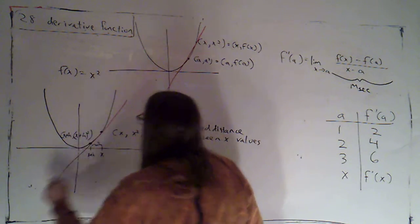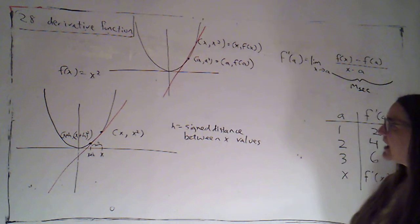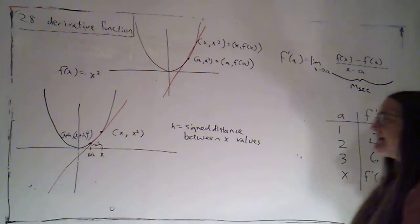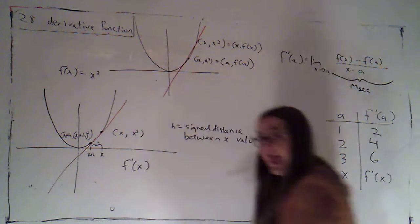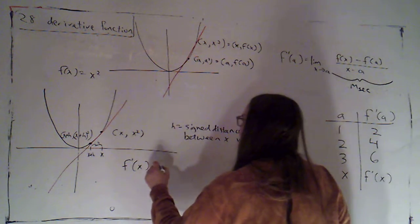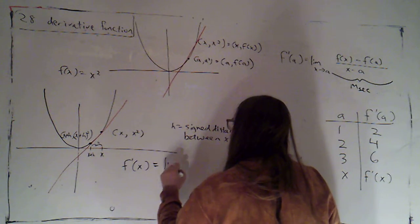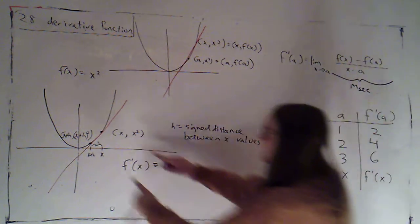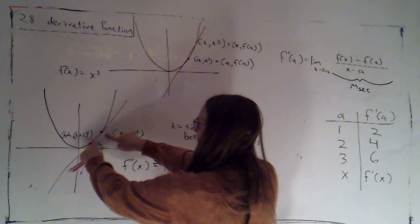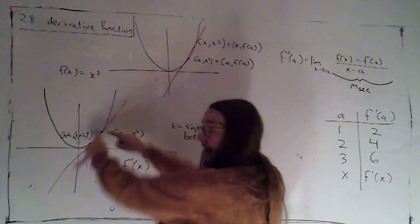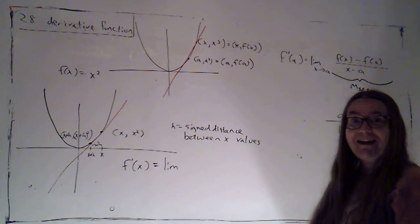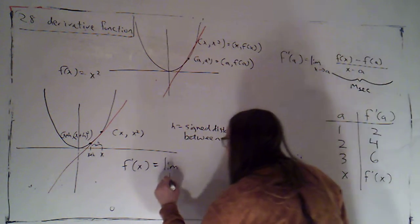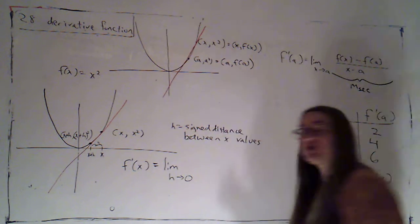Okay. So then here's my secant line. And so I can say f prime at x is going to be the limit. Now, what I'm doing is I'm moving this point closer and closer to this point. And I accomplish that by making the x values get closer and closer together. What's nice about that is that just means I'm letting h go to zero.